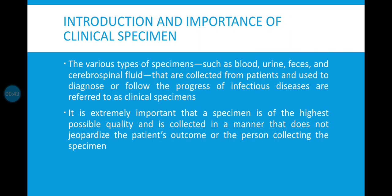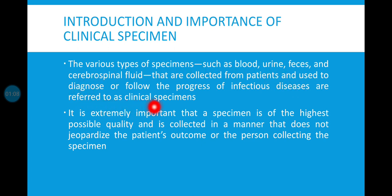Introduction and importance of the clinical specimen. First of all, what is a clinical specimen? The various types of specimen such as blood, urine, feces, or CSF which we collect from patients and use for diagnosis, or we use these specimens to follow the progress of infectious disease. All these specimens are known as clinical specimens.